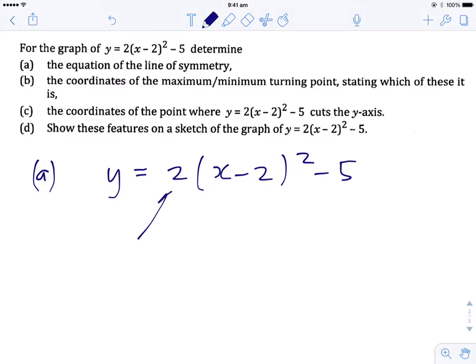I know that this thing here affects how wide it is, whether it's really skinny or really wide. So the 2 there means it's going to be wider than usual. I know that this part here shifts the quadratic 2 across to the right and I know the minus 5 here shifts it down 5. So I could draw this almost straight away. I could always skip straight to D to get the graph of it and then answer all the questions.